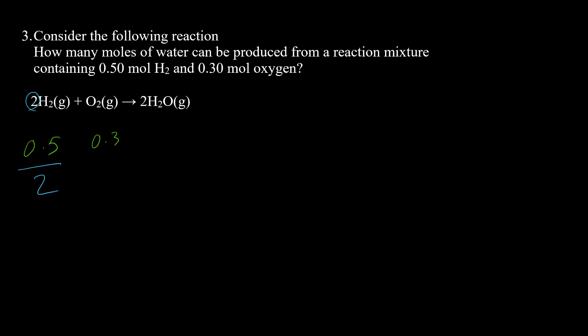For the first method, we find which reactant is limiting. The coefficient for hydrogen is 2 and for oxygen is 1. The ratio for hydrogen is 0.5/2 = 0.25, and for oxygen is 0.3/1 = 0.3. Since 0.25 is lower, hydrogen is the limiting reactant, and we perform our calculation based on the hydrogen value, not oxygen.